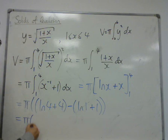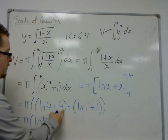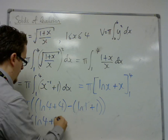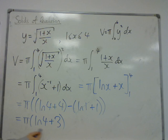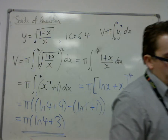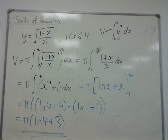So, we get π lots of ln 4. 4 take away 1 is 3. So, in exact form, this is the volume of the integral. This π lots of ln 4 + 3.